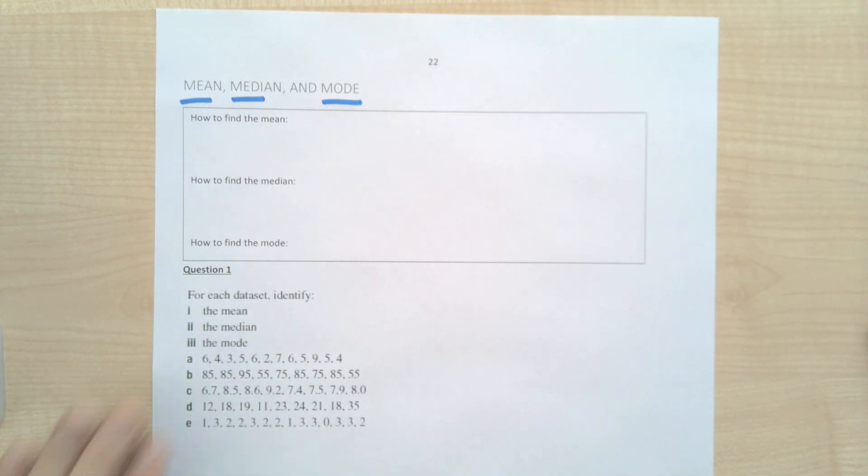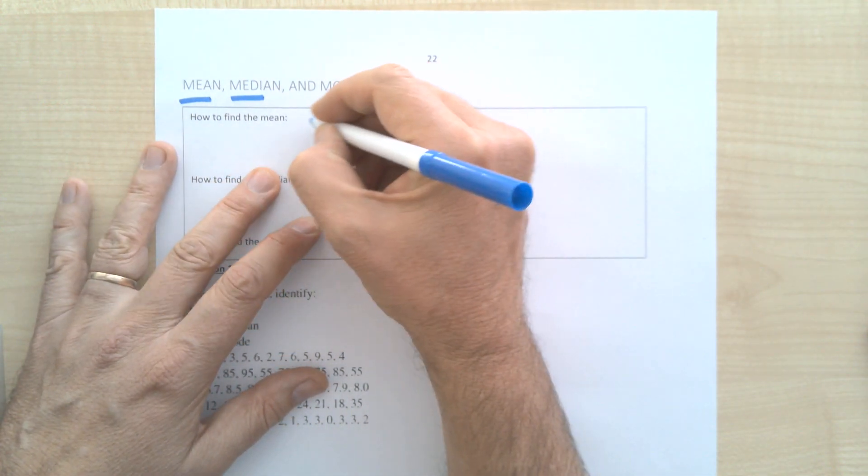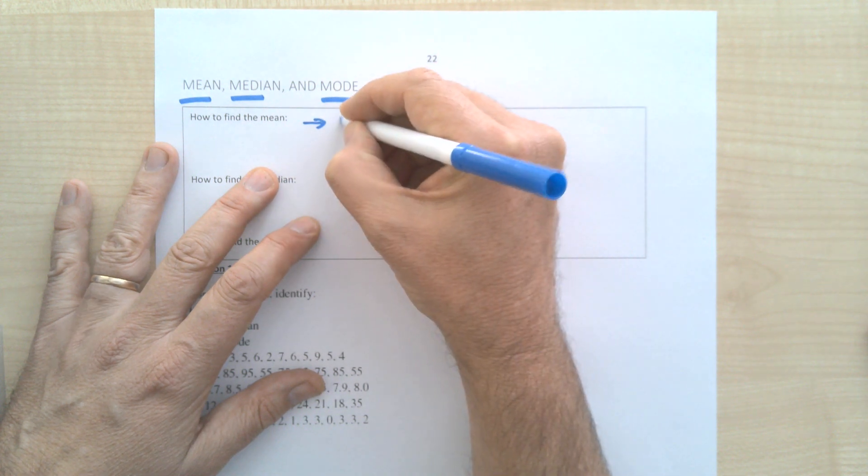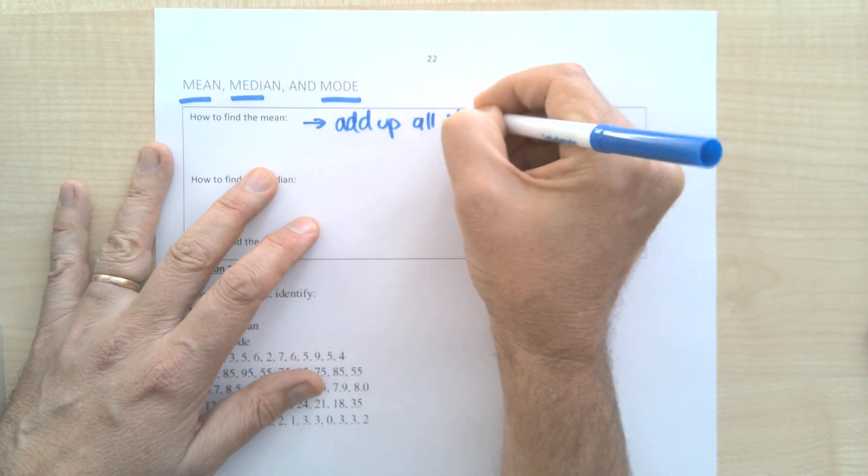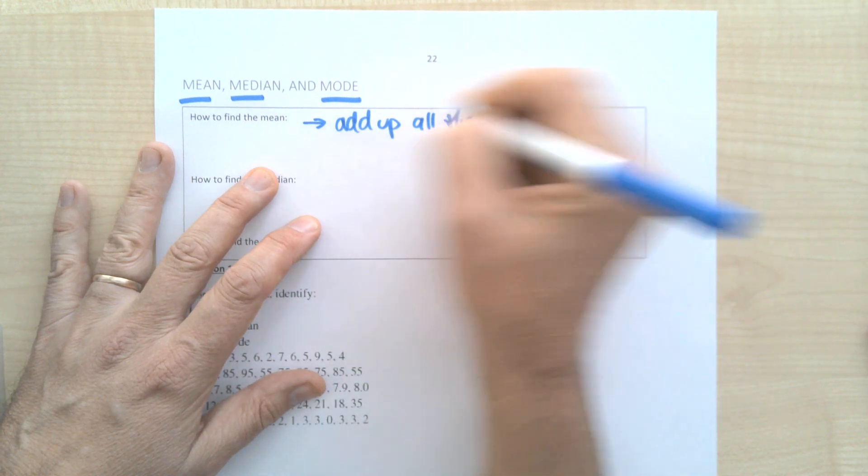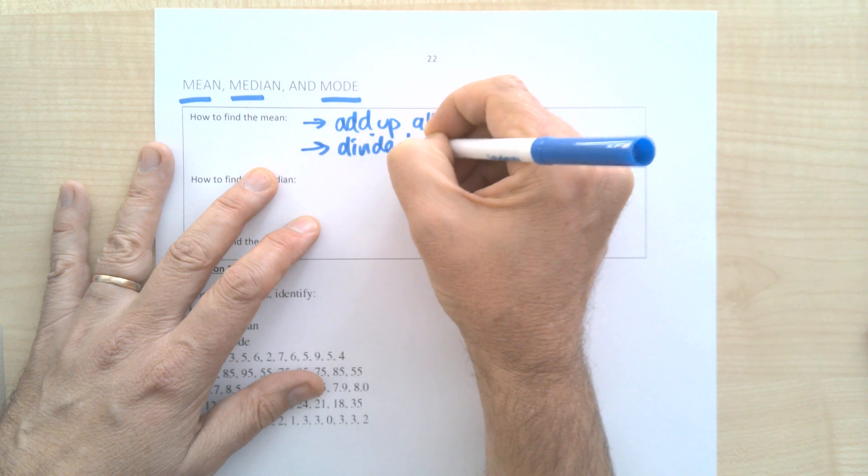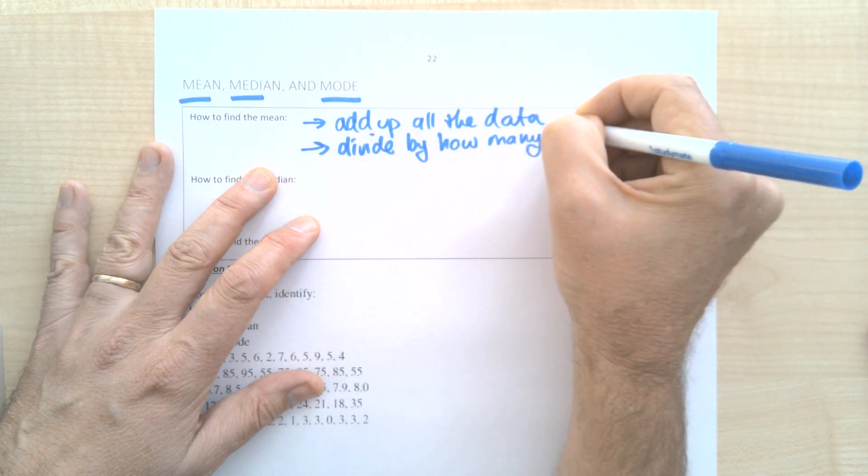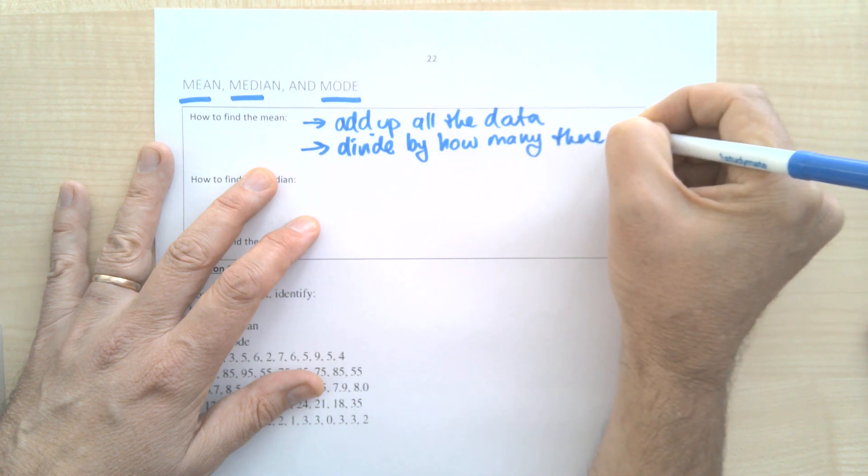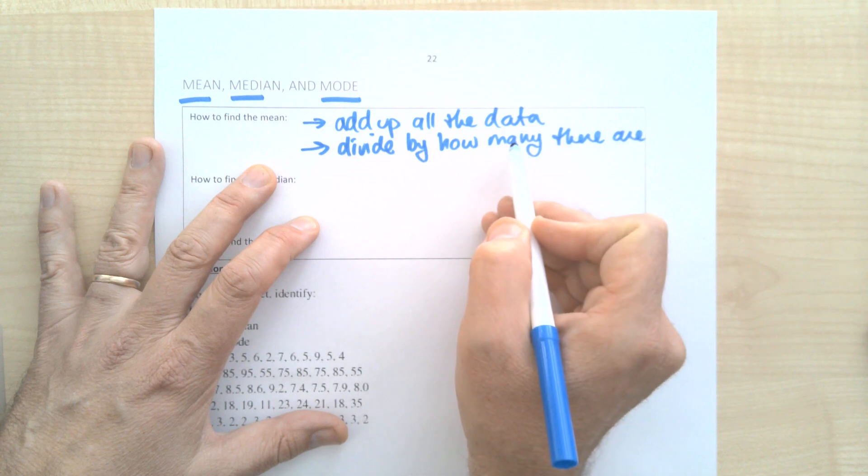So first of all, let's fill this in. How do you find the mean? The mean is just the average. So what you do here is you add up all the data or all the numbers, and then you divide by how many. So if there were 20 numbers and I added them all up, I've then got to divide by 20.